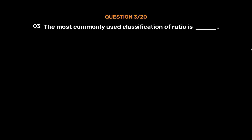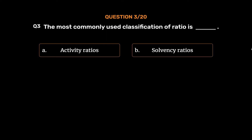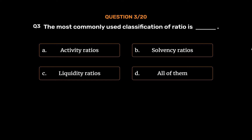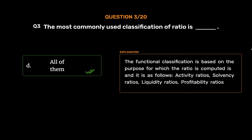Question number 3. The most commonly used classification of ratio is: Option A: Activity Ratios, Option B: Solvency Ratios, Option C: Liquidity Ratios, Option D: All of them. The functional classification is based on the purpose for which the ratio is computed, and includes Activity Ratios, Solvency Ratios, Liquidity Ratios, and Profitability Ratios.